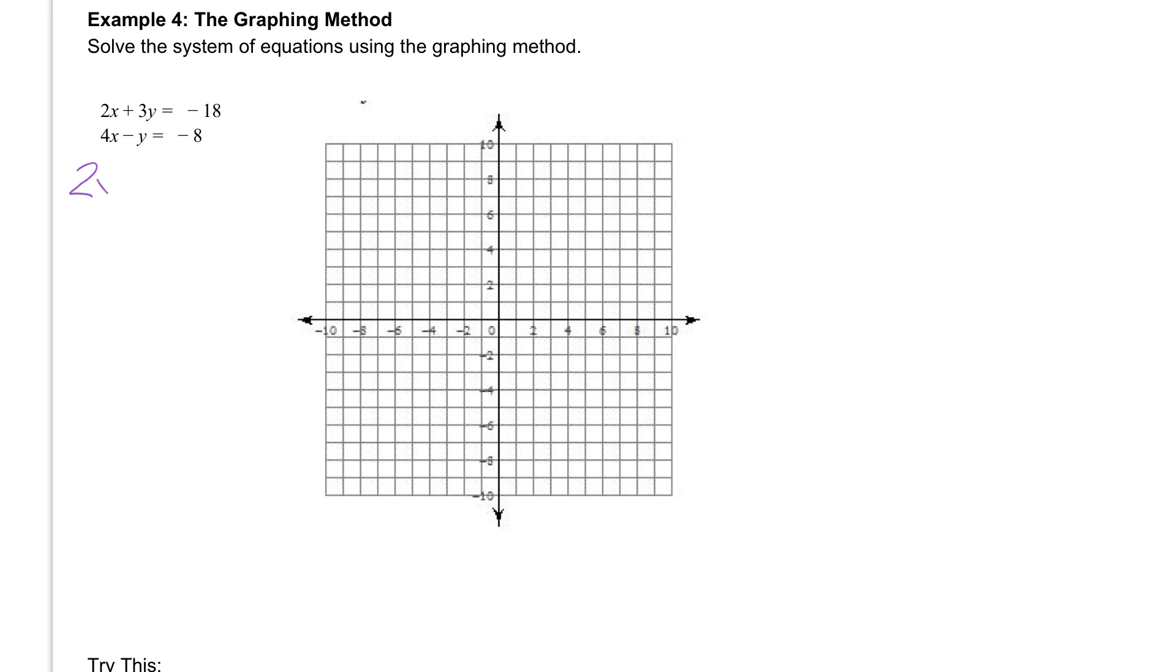We have 2x plus 3y equal to negative 18. And to solve for y the first thing we should do is subtract the 2x from both sides, and we get 3y is equal to negative 18 minus 2x. And then we're going to divide everything by 3, and we get y is equal to negative 6 minus 2 thirds x.